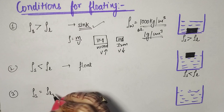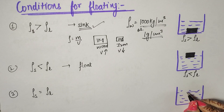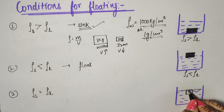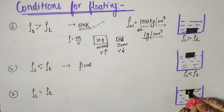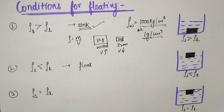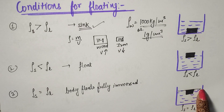Third case: if density of solid equals density of liquid, then it will neither sink nor float. It will be attached to the surface of the liquid — the surface of the solid and the liquid surface will be at the same level. The body will be just submerged with its surface aligned with the liquid surface.